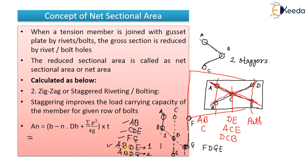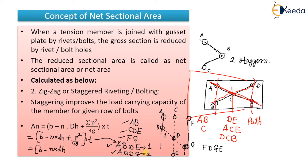The formula for staggered bolting is: AN = (B − N·DH + P²/4G) × T. For one stagger, you add P²/4G once. For path A-B-D-G with two staggers: AN = (B − N·DH + P²/4G + P²/4G) × T. For a path with three staggers, you add P²/4G three times. However many staggers exist in the path, that many times you include the P²/4G value.